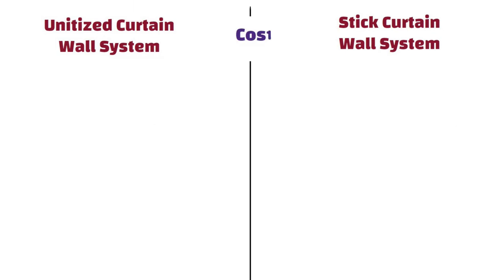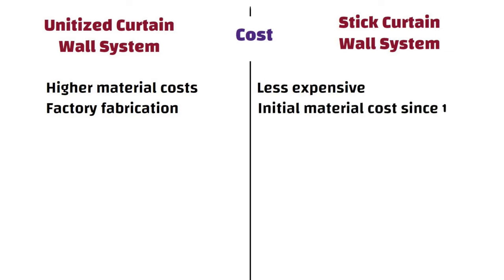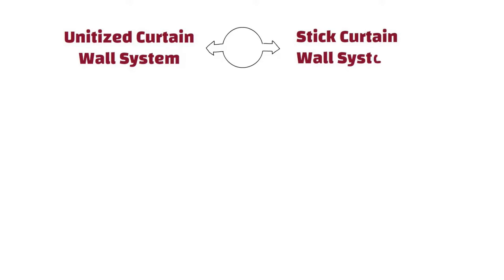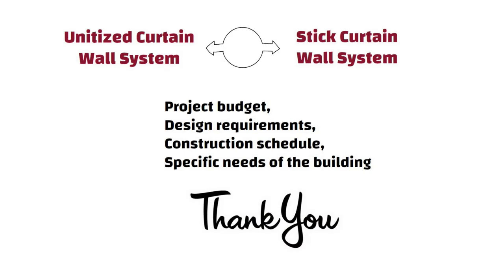Cost: Unitized systems are often associated with higher material costs due to the precision required in factory fabrication, while stick systems are often less expensive in terms of initial material cost since they involve simpler components. The choice between these systems depends on factors like project budget, design requirements, construction schedule, and the specific needs of the building. Thanks for watching.